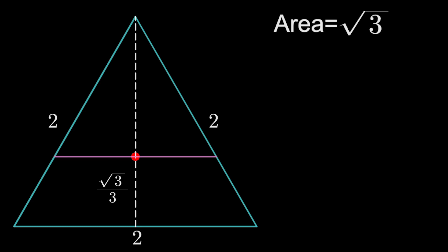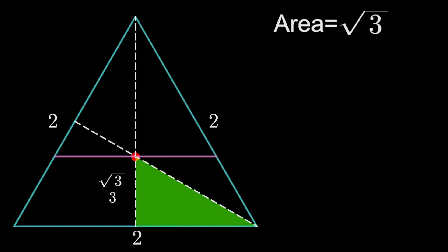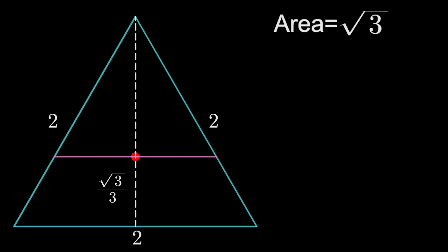To see that, just draw this median, and realize this is a 30-60-90 triangle with a base of 1. So, simple trig will get you a height of root 3 over 3. And remember, the original height was simply root 3. Thus, the top part has a length of 2 root 3 over 3, 2 thirds of that height.